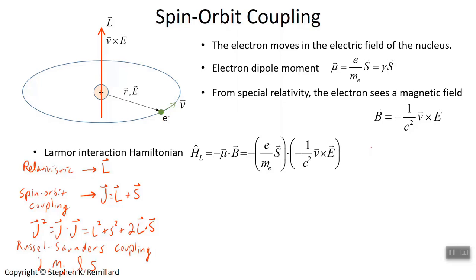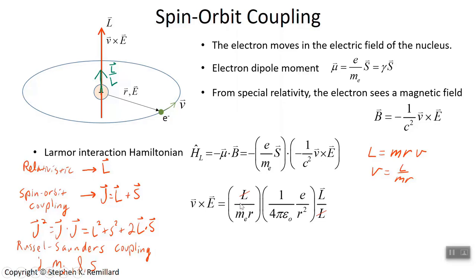The electron has a certain angular momentum L. L is M times R cross V, and it's going in a circle. The radius and velocity are perpendicular, so the angular momentum is MRV, or that velocity is angular momentum over MR. So we use L over MR for velocity. One way to write a unit vector is to take the ratio of the angular momentum vector to its magnitude — that's the unit vector describing the direction of V cross E. Looking at V cross E: velocity is L over MR, E is the Coulombic field — one over four pi epsilon naught, charge over R squared — and the direction of that cross product is the angular momentum over L. So V cross E has angular momentum in it.